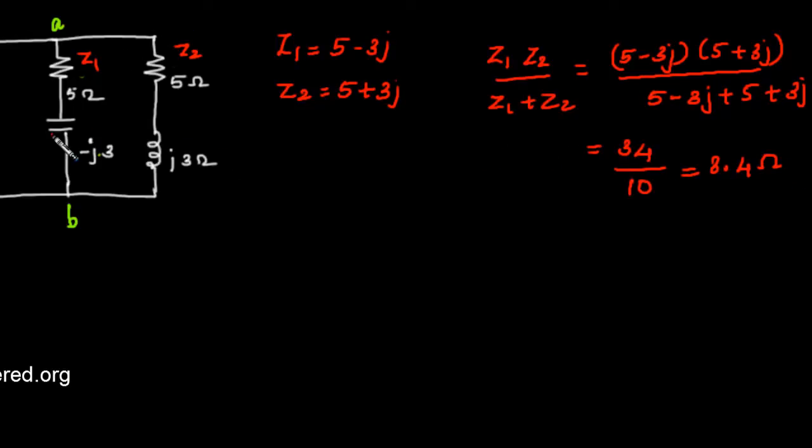Now even though we have reactive elements, the equivalent impedance of the network is purely resistive, that is 3.4 ohms.